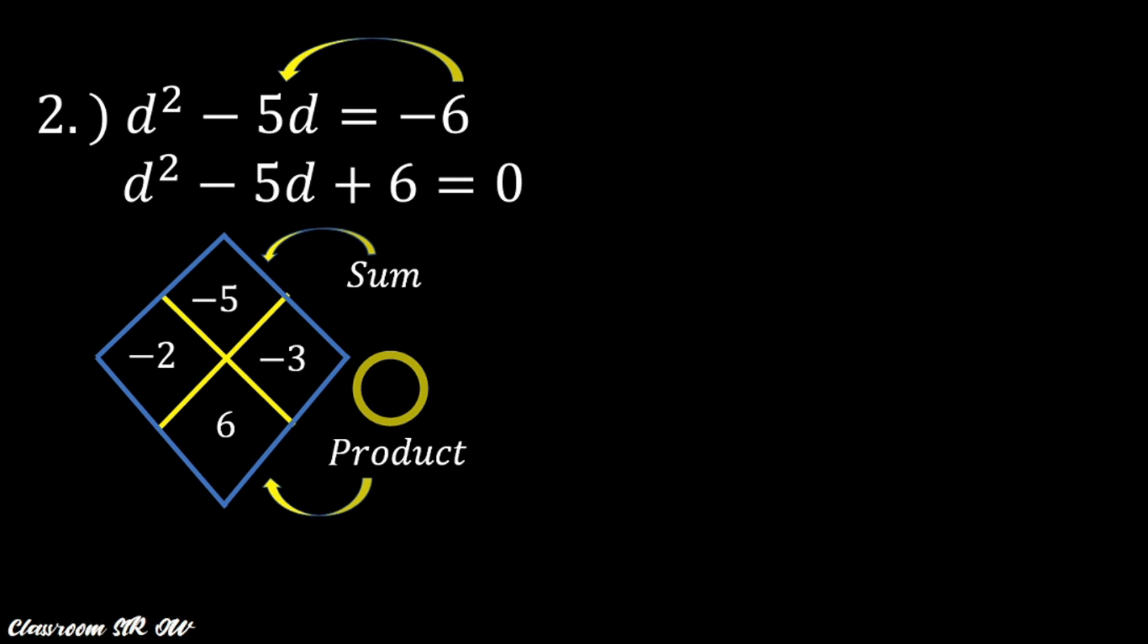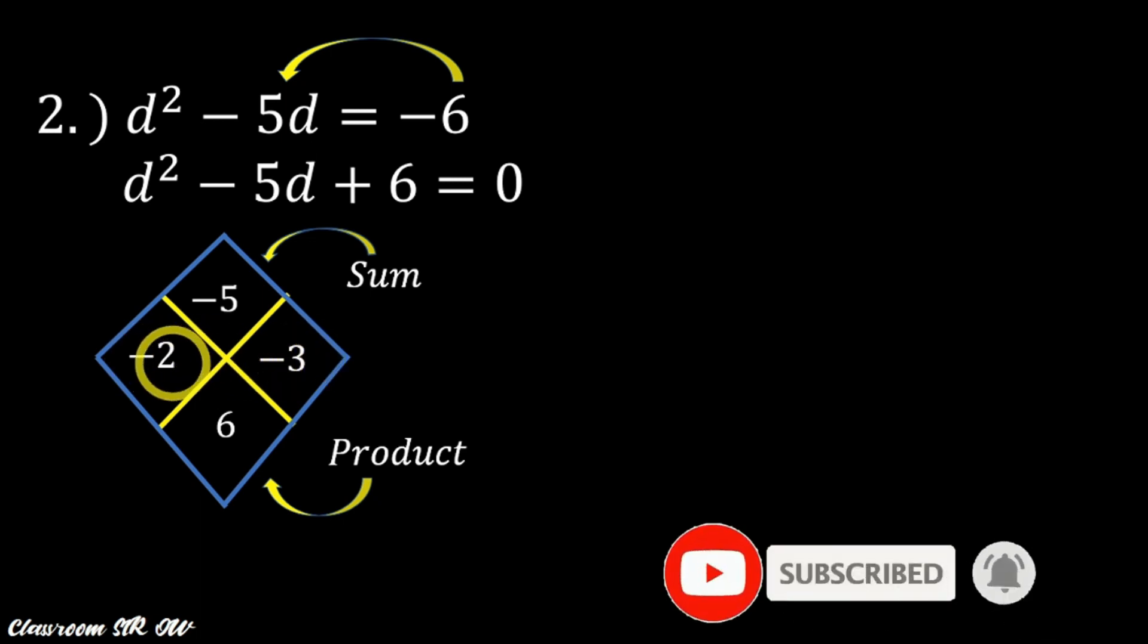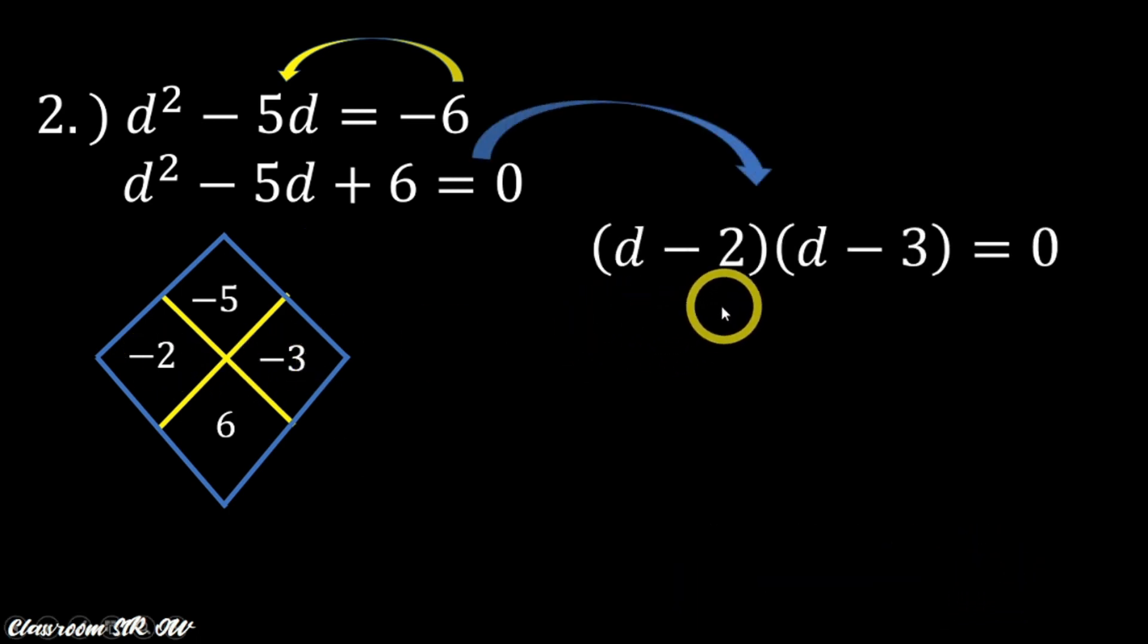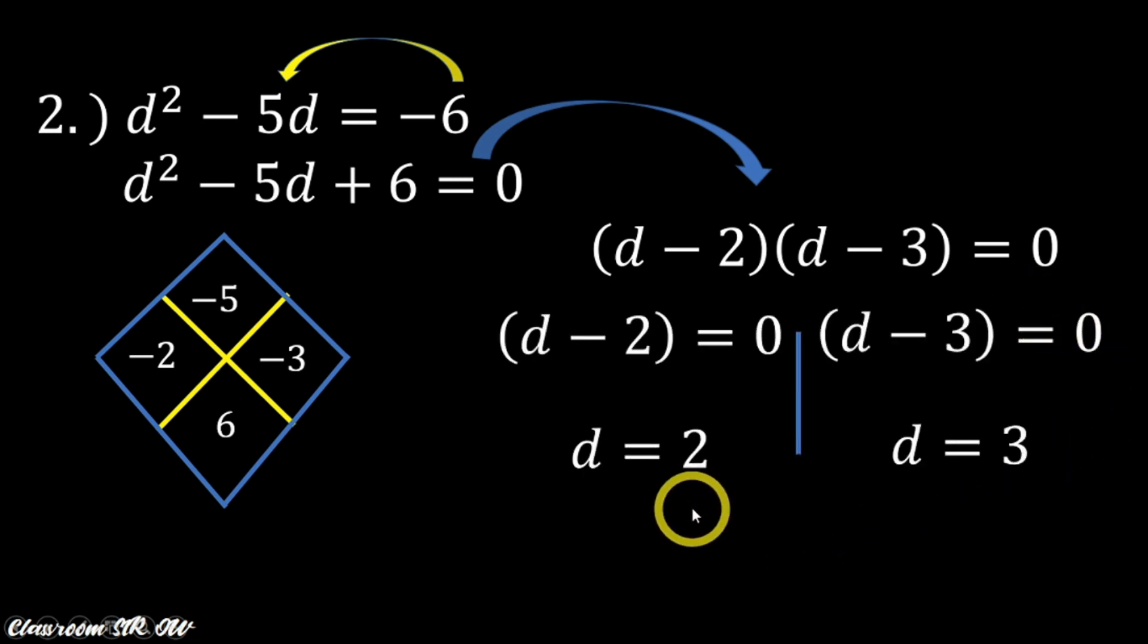Of course, that is -2 and -3. Now you will ask me, what if -3 is placed here and -2 is at the other side? So no worries. It doesn't matter anyway because they are all negative. So you can place -3 here and -2 on the other side and vice versa. So this -2 and -3, of course, that is our factor: d - 2, d - 3 = 0. So whatever is the sign here is also the sign. So equating them both to 0, that gives us d = 2, d = 3.